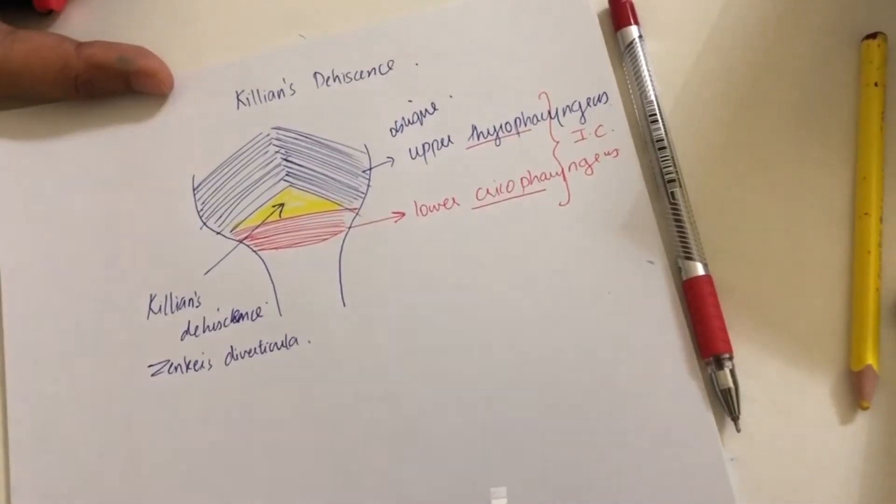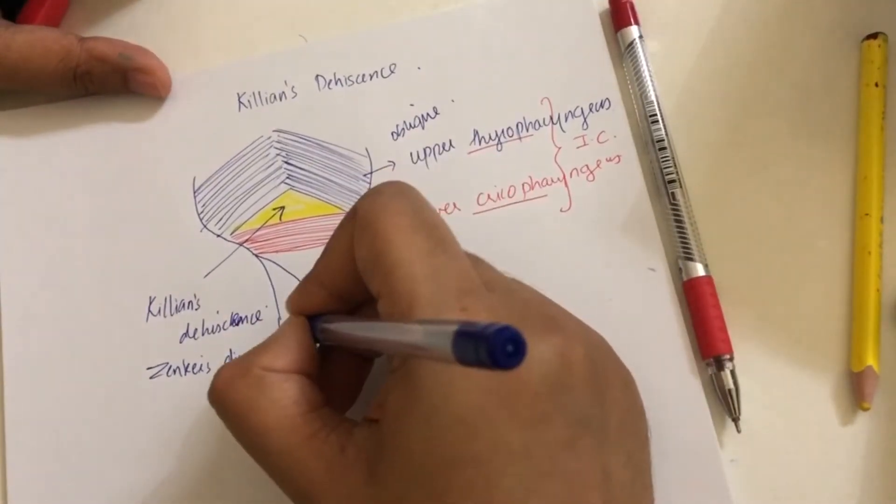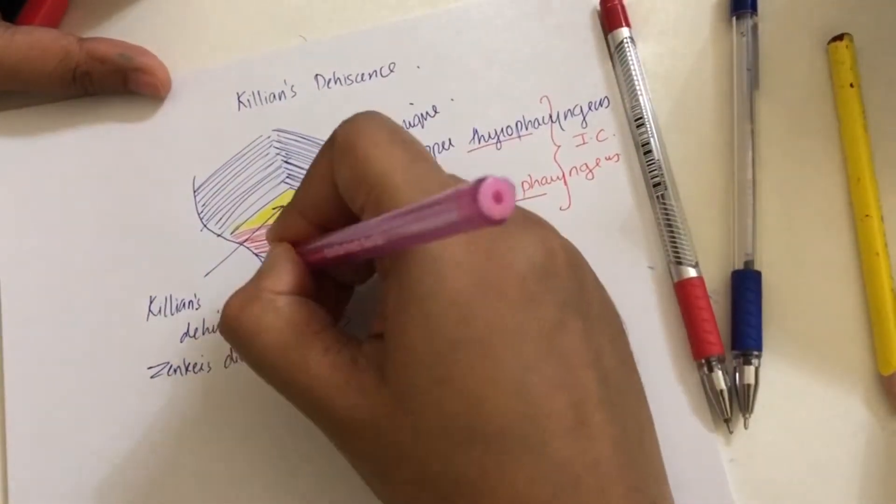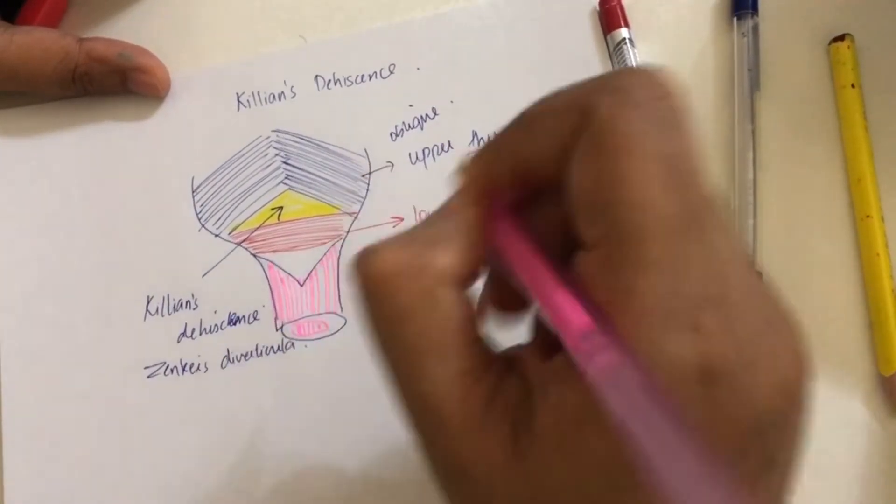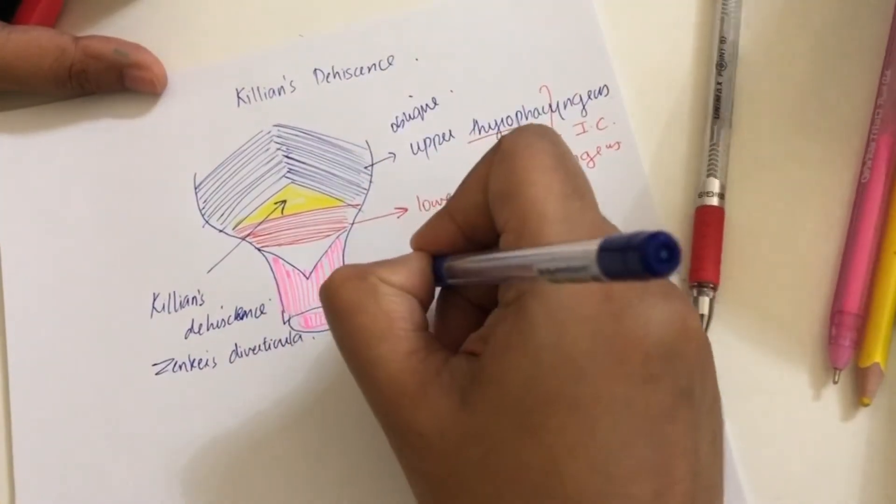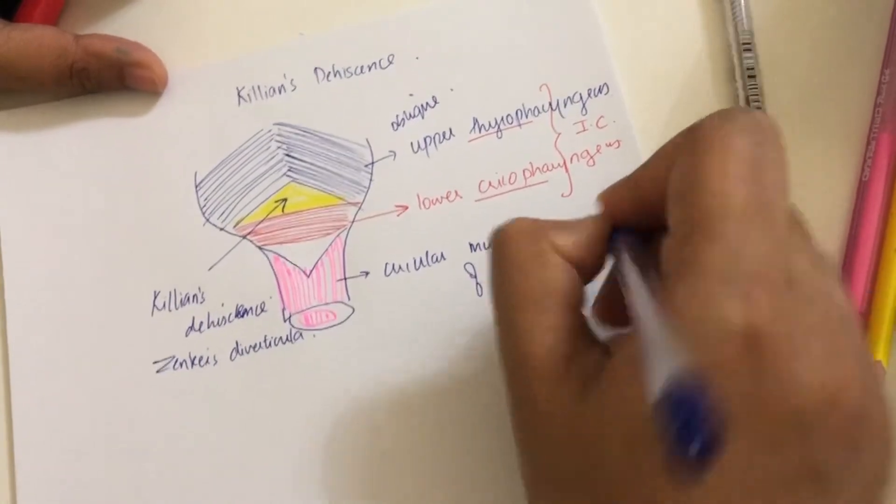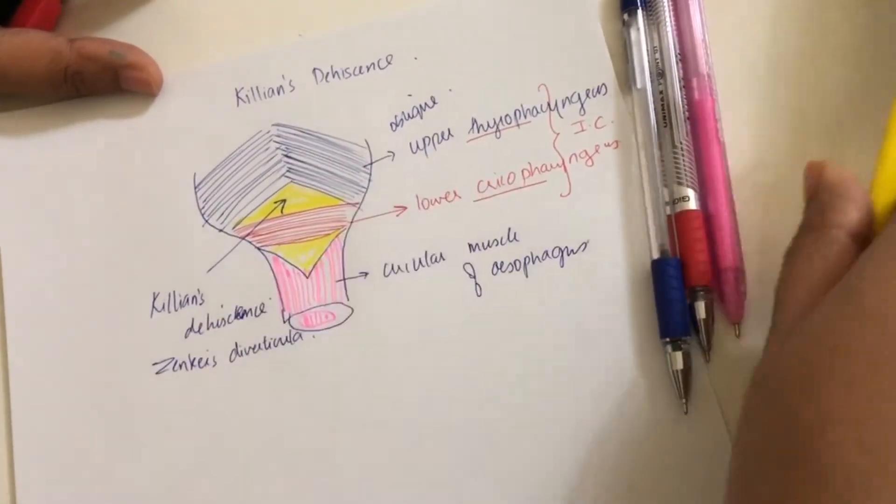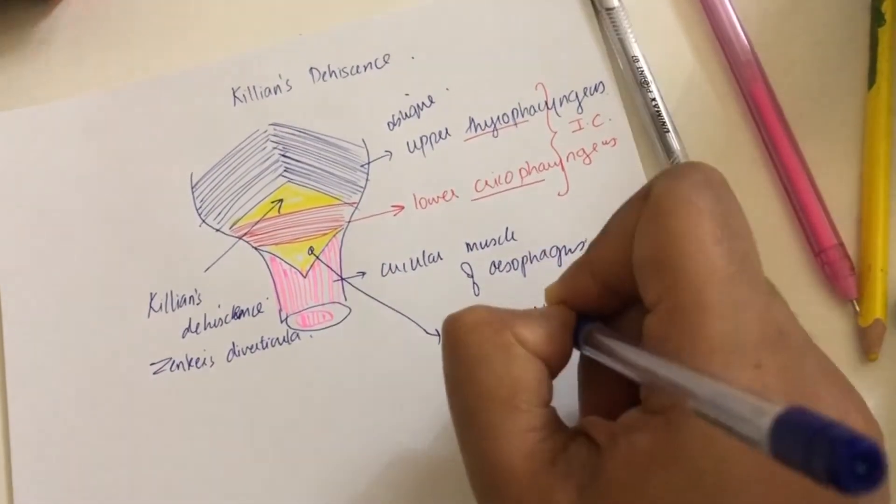There is another site of weakness in the pharyngeal wall which is called Laimer's triangle. It is present between the lower cricopharyngeus and the circular muscle of the esophagus. Between these two muscles, this defect is called the Laimer's triangle.